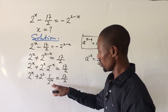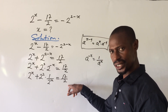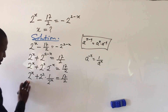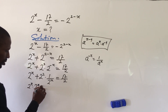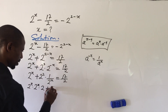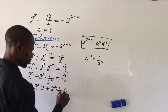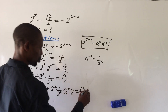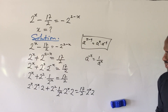To clear the fraction, we multiply everything through by 2^x and also by 2. Multiplying through by 2^x eliminates the 1 over 2^x term, and multiplying by 2 removes the denominator on the right. After multiplying, we get: 2^x times 2^x times 2 plus 4 times 2^x times 2 equals 17 times 2^x times 2.